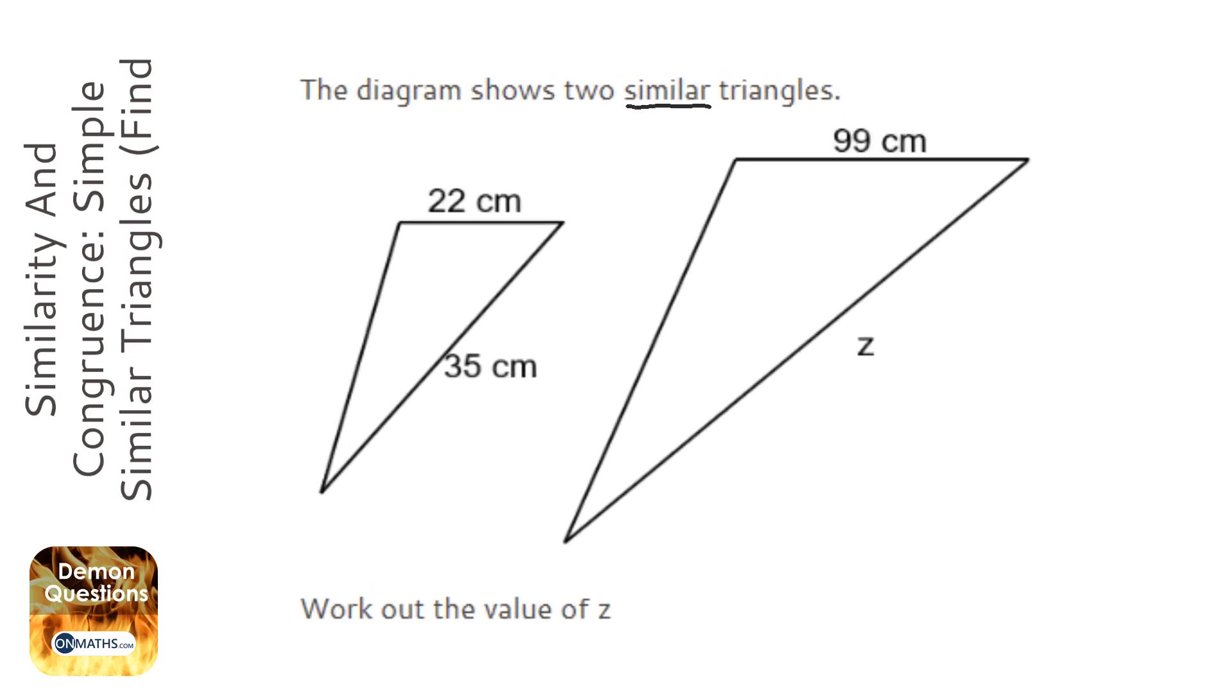Okay, so we're told we've got two similar triangles. Now similar just means an enlargement and it means the shape is the same, the angles are the same. The only thing that's changed is we've times all the lengths by something.